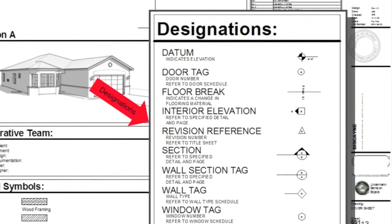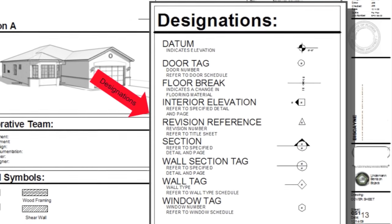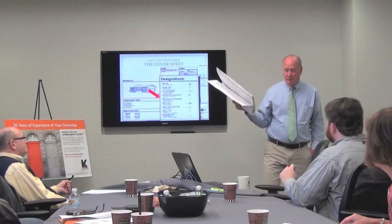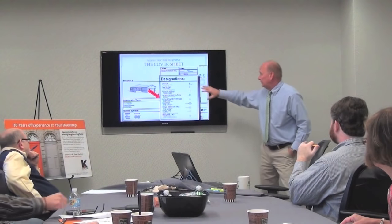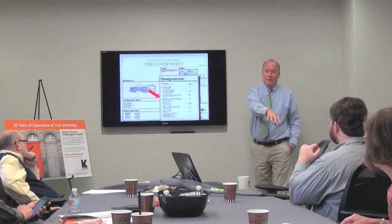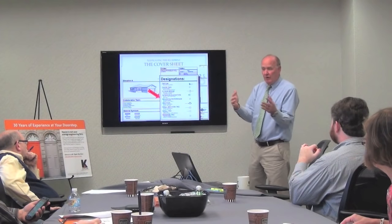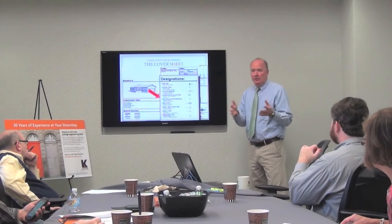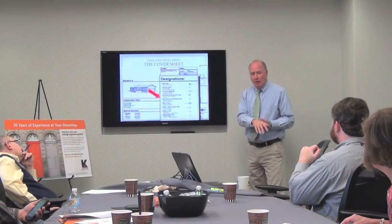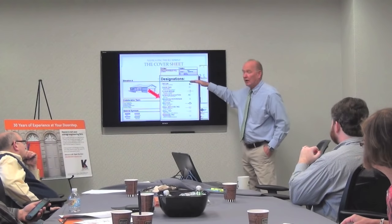Look at these designations as your road signs. If you look at a set of drawings as a map — a map of how to build something — these are your road signs. They're going to tell you directions; this is your GPS to get through the set of drawings. These are going to refer you to another page, another section, some other aspect of a particular part of the drawing. If you follow what these are, you're going to be able to maneuver through the drawing a whole lot easier. Listen to your GPS — listen to the road signs here, because they are going to direct you.